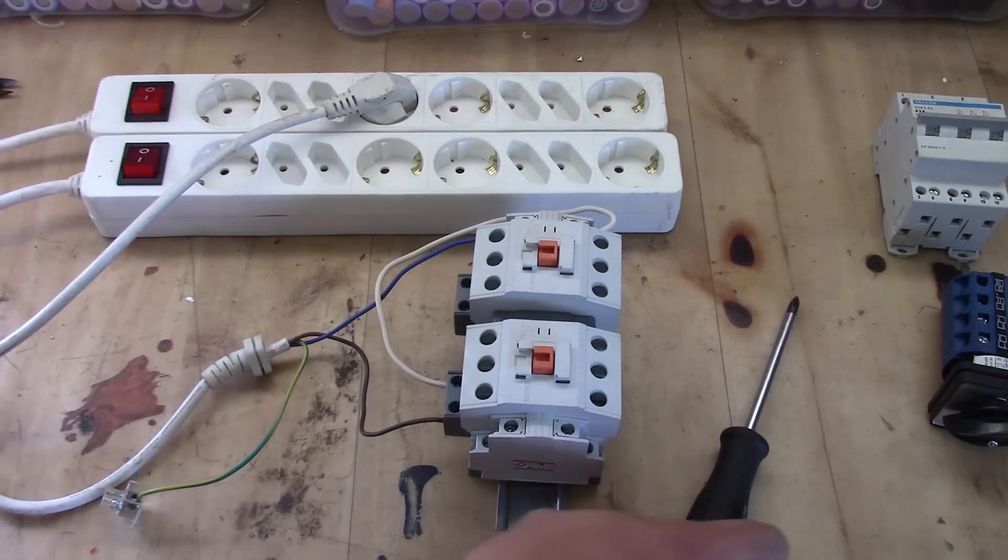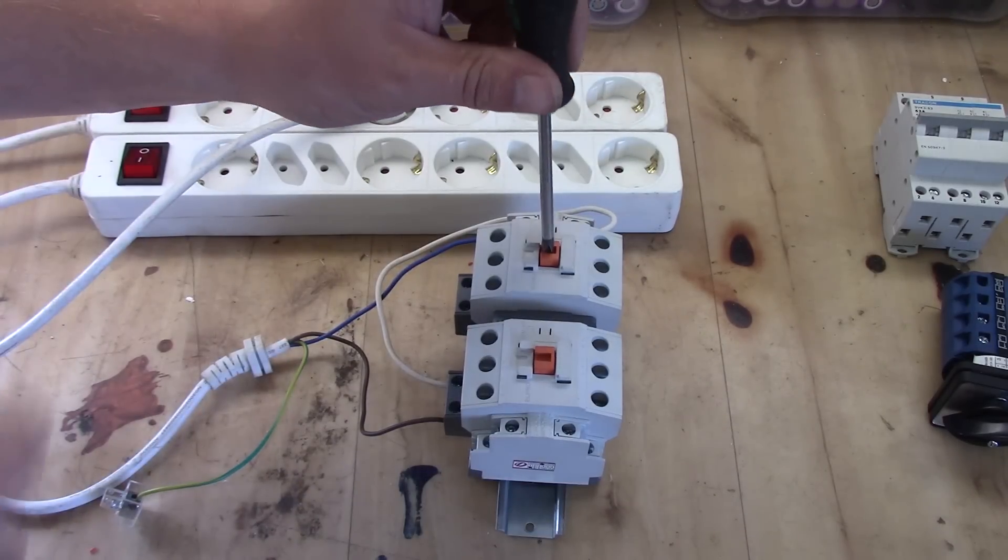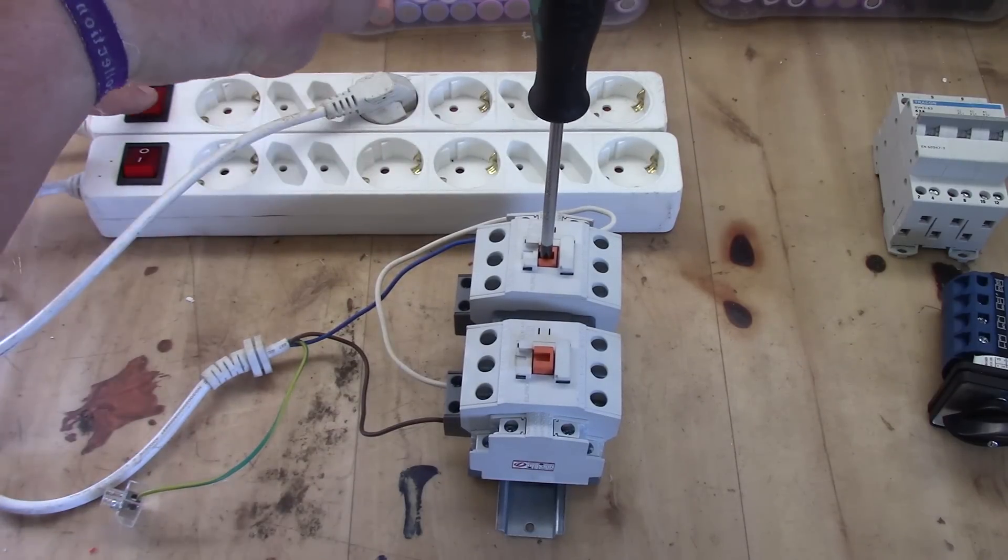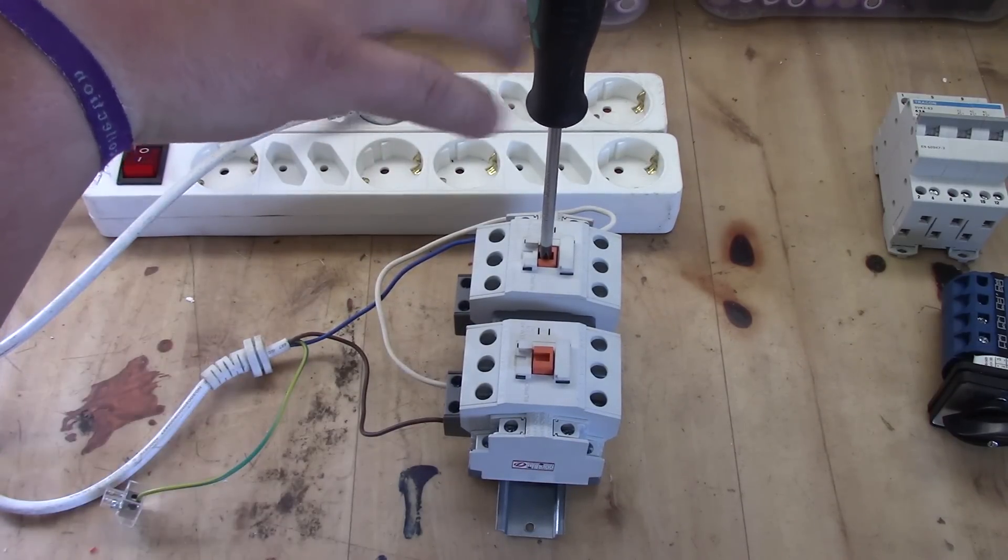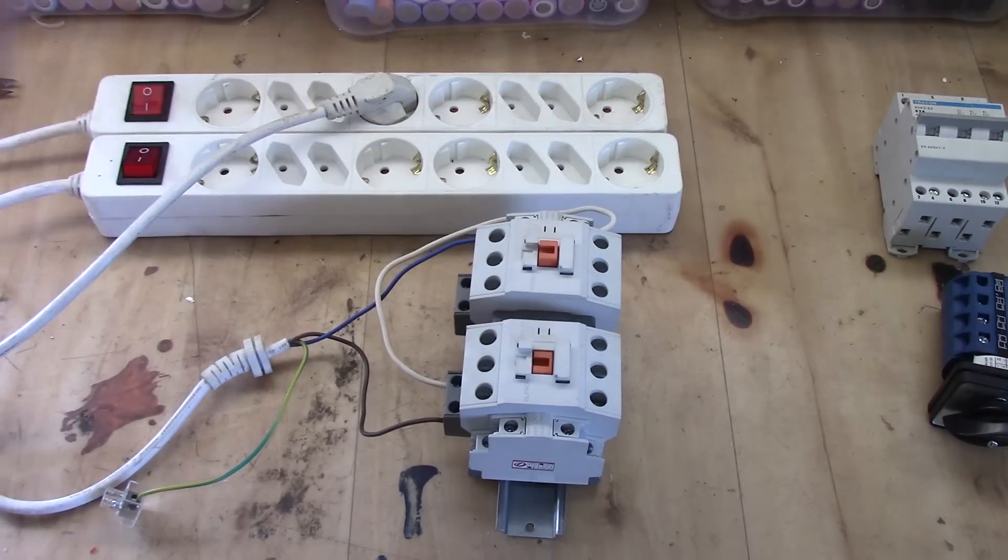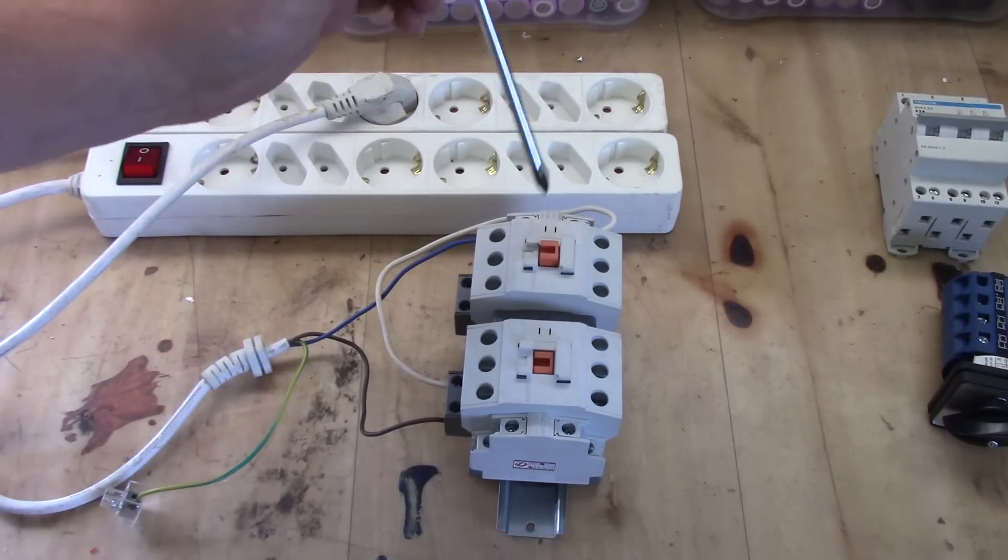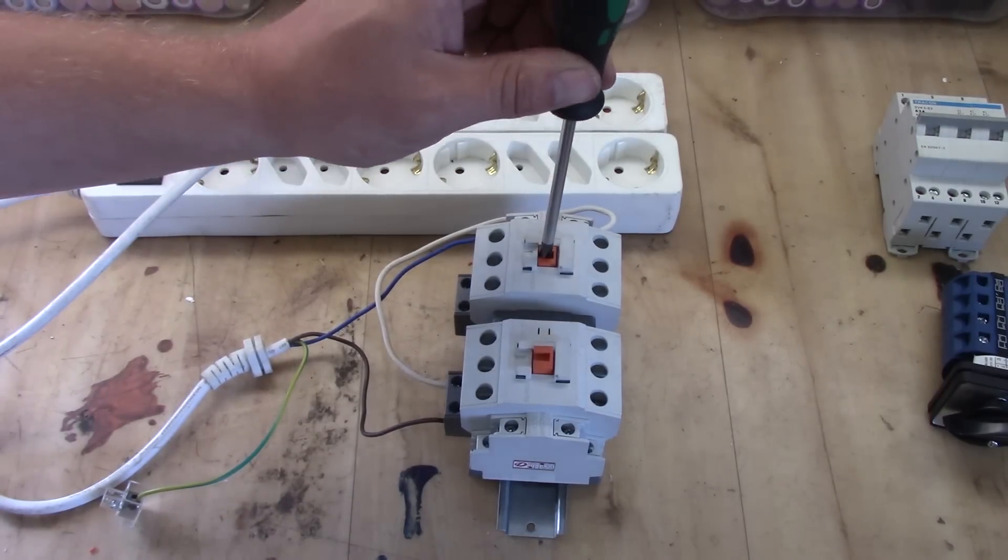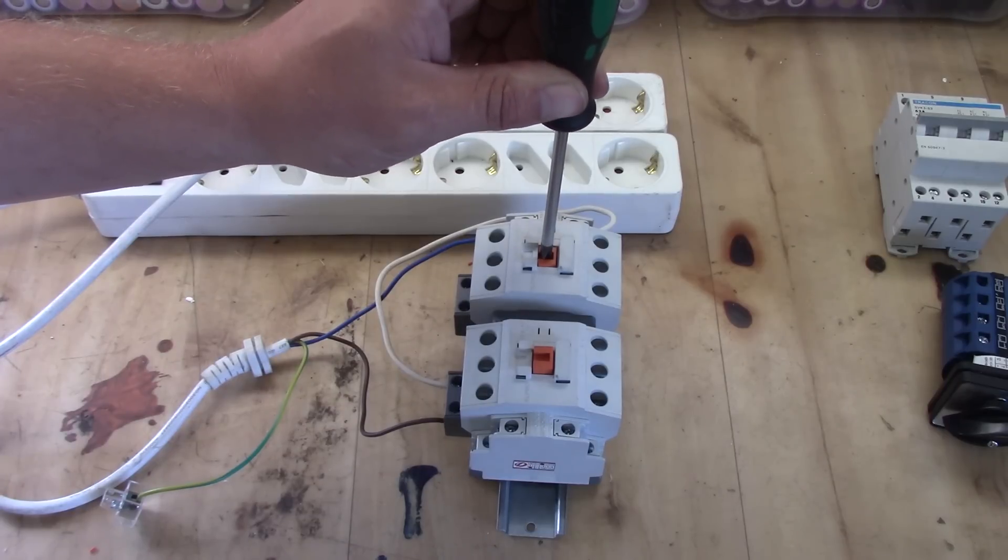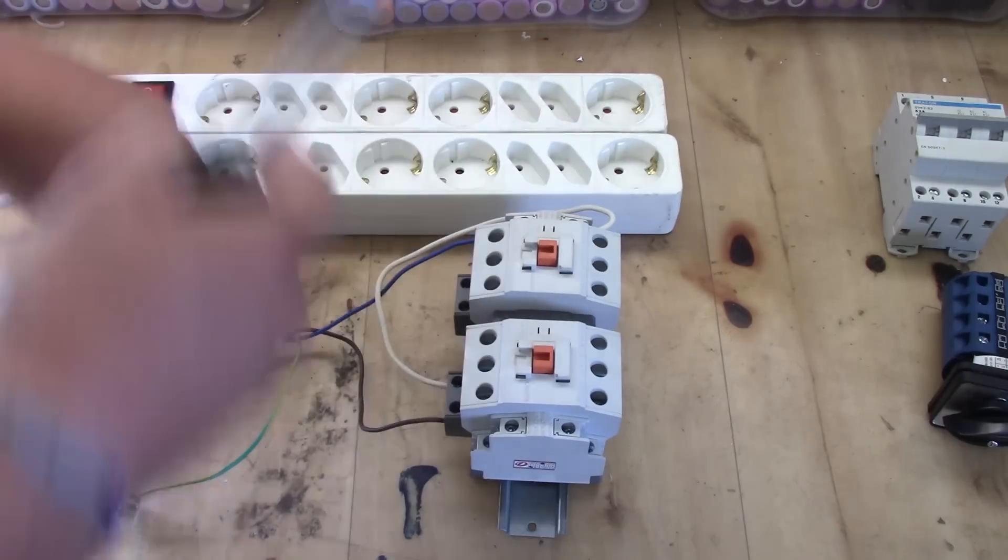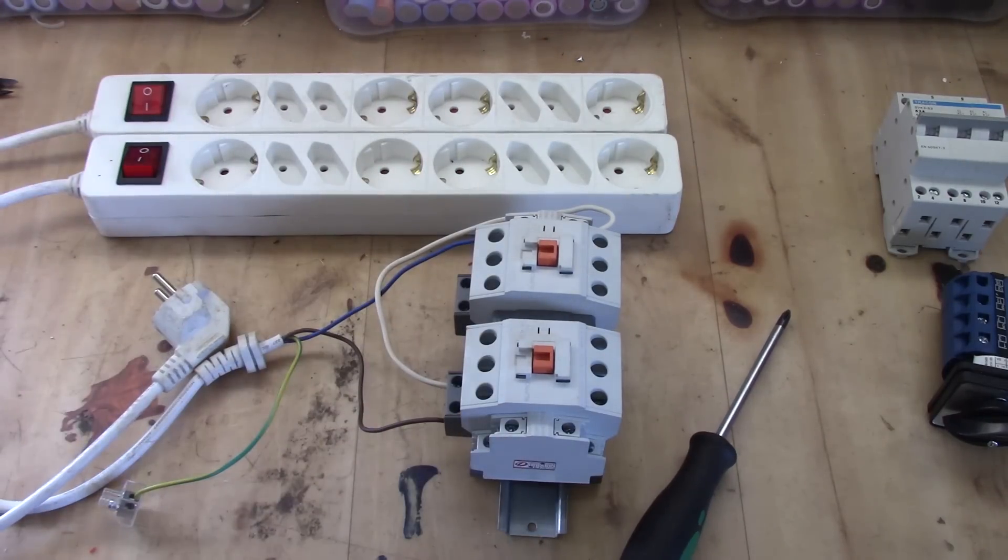What's different now is if I hold this one down like if this one were engaged and turn on the power, nothing happens on that side until I release it. So basically this one is controlling the other relay or the contactor.